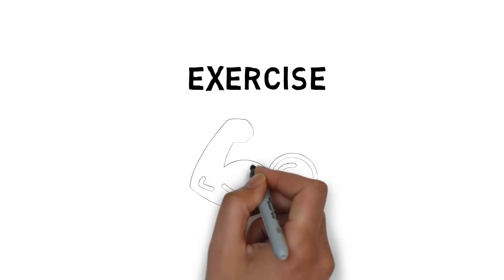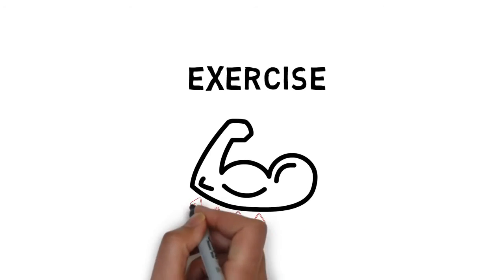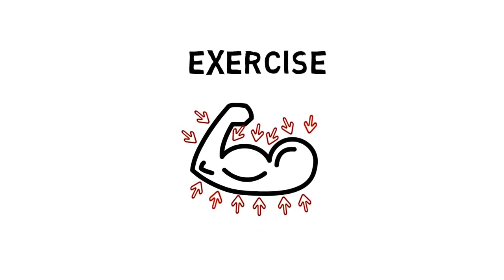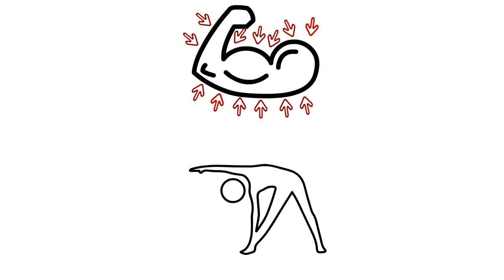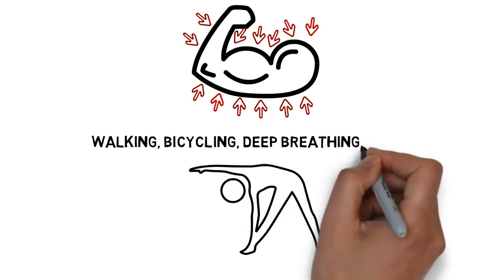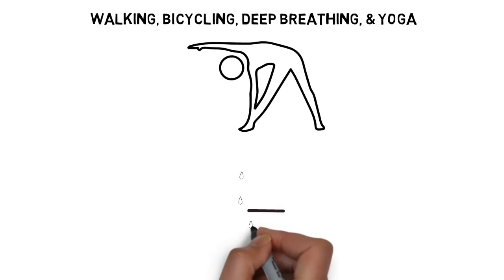Exercise. Since the lymph system has no pump like your blood system, it moves by capillary action when muscles contract or if it's physically moved. Light exercise like walking, bike riding, deep breathing, and yoga can help move lymph to the kidneys.